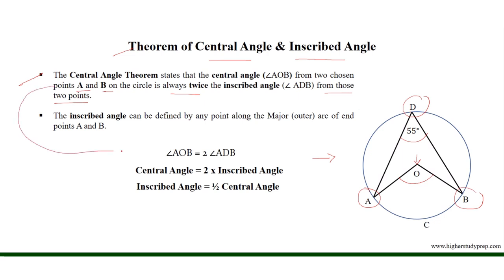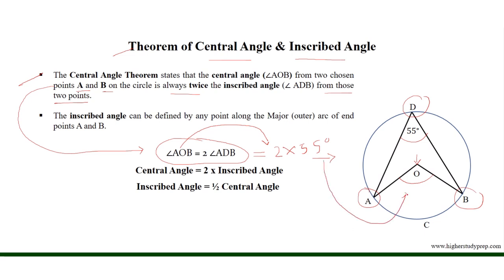According to the theorem, central angle AOB equals two times the inscribed angle ADB. Since angle ADB is given as 55 degrees, angle AOB equals two times 55 degrees, which results in 110 degrees.